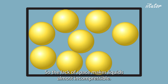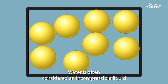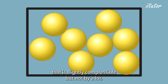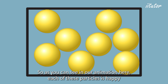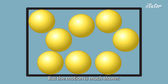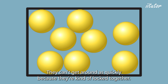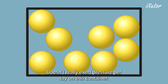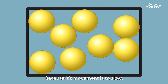The lack of space makes liquids almost incompressible. Water is often considered an incompressible liquid — it is slightly compressible, but not by much. In the animation, each particle moves and collides, but the motion is much slower. They can't get around as quickly because they're kind of locked together, and the liquid doesn't really exert pressure on the container because its movement is so slow.